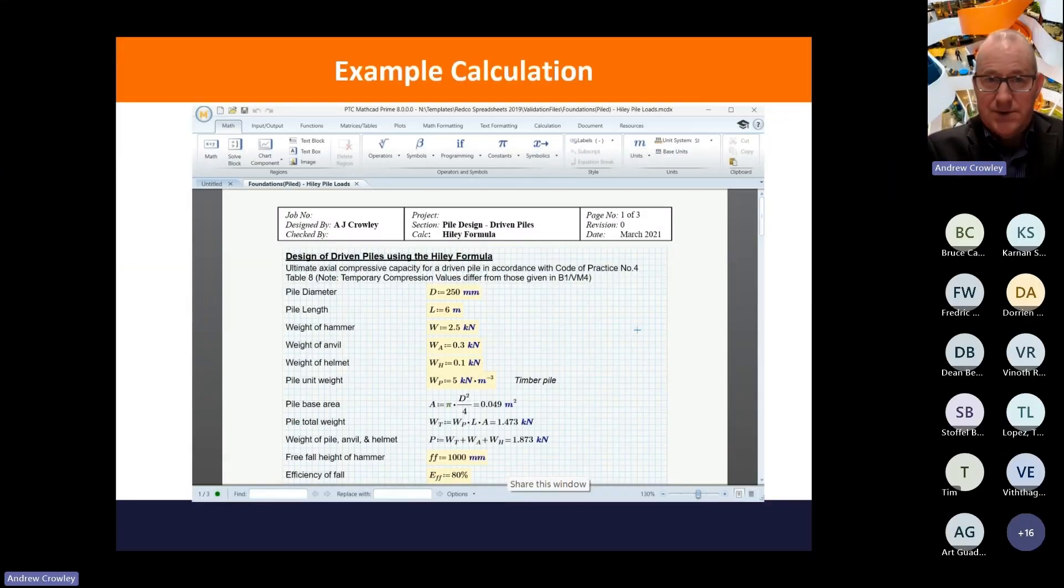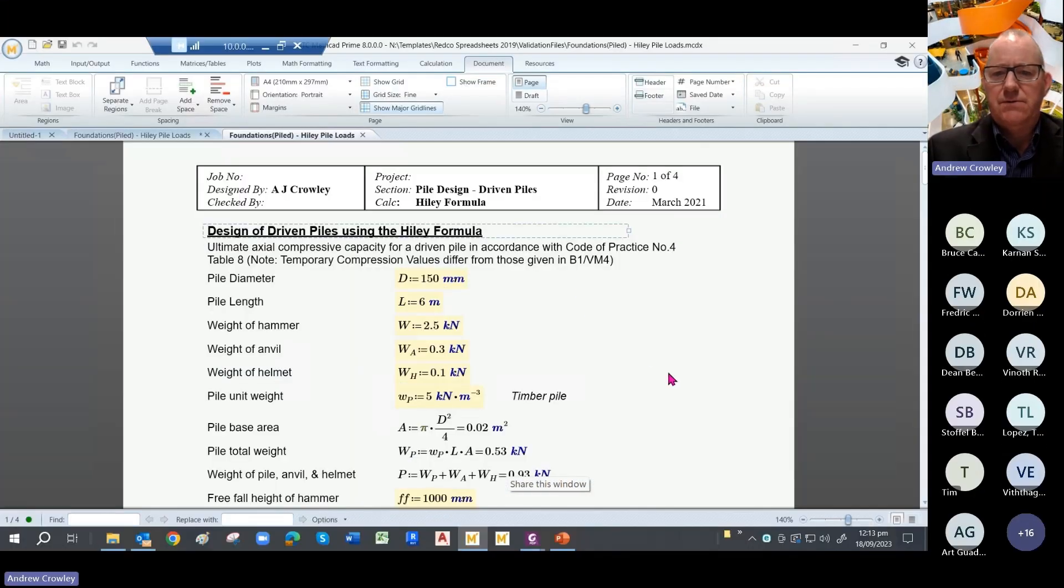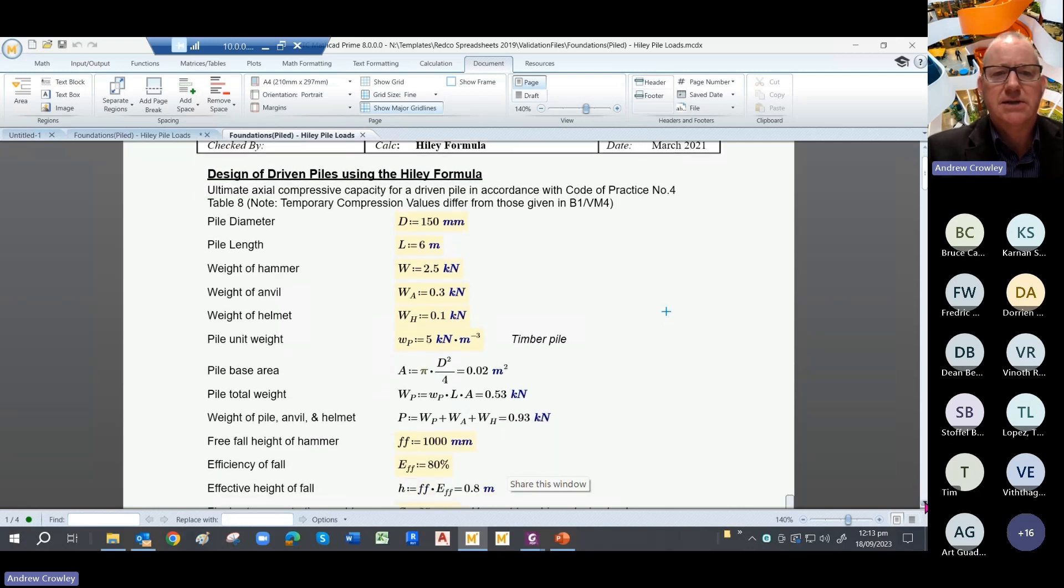We're going to look at the MathCAD version and go through the MathCAD calculation. It was done a few years ago, but I had to update it at the weekend because I found a few little niggles in it. So you put in your basic input information. I have a convention where the input information is highlighted in yellow and the calculations are done in plain text.